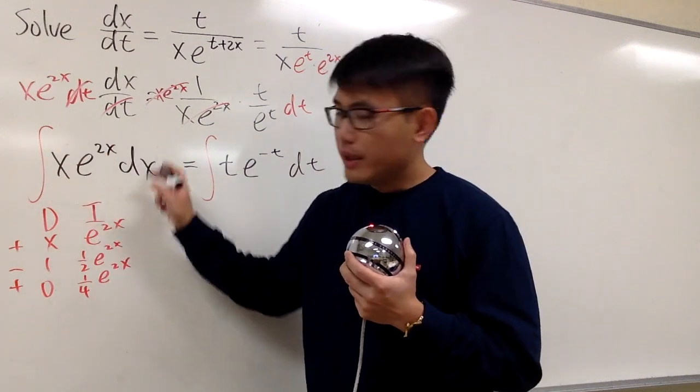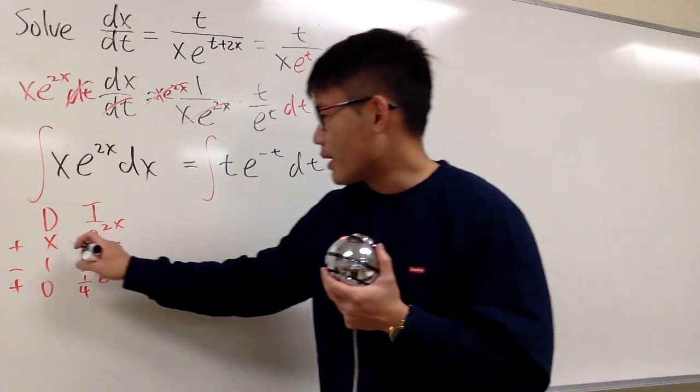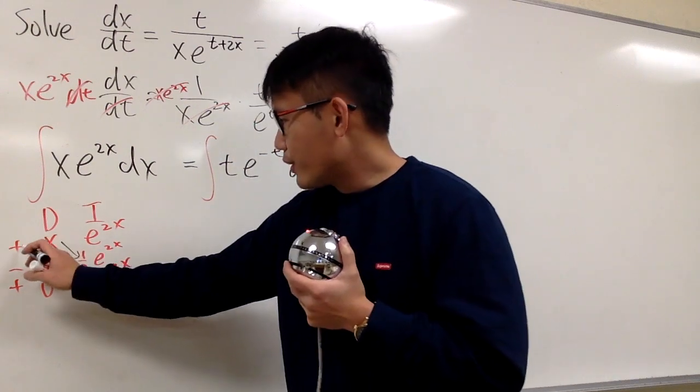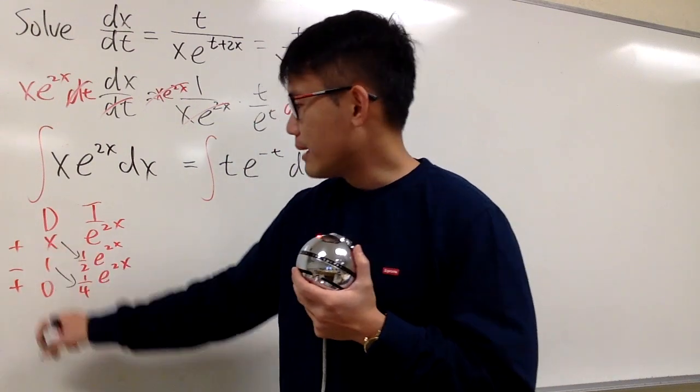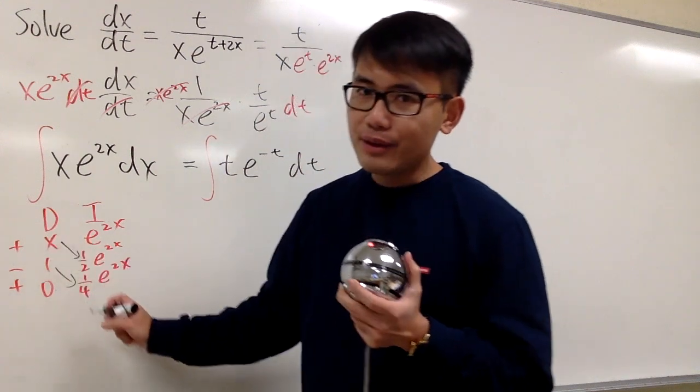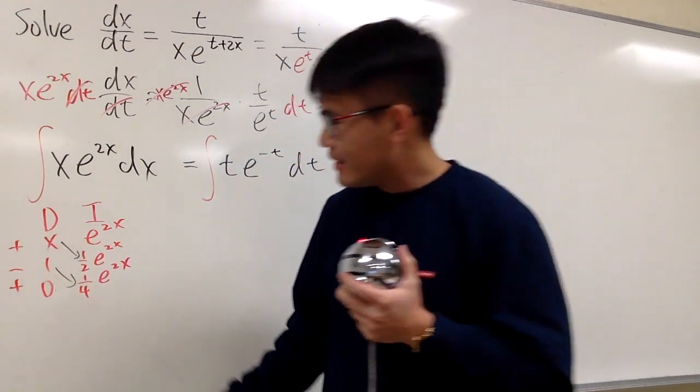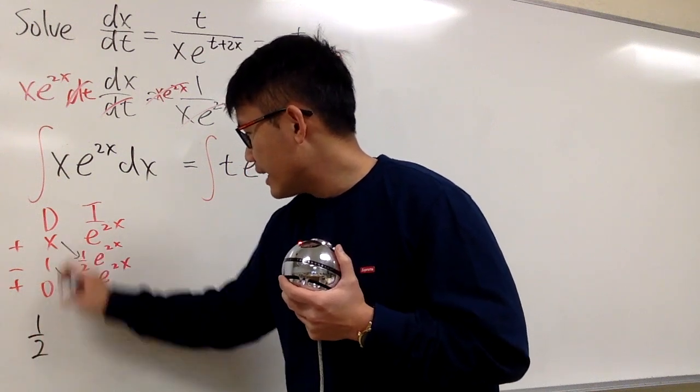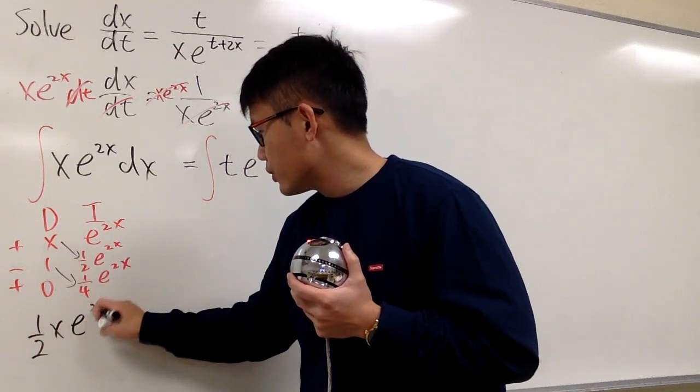So after we integrate this, running through the DI method with integration by parts, this is pretty much the answer. Don't forget the sign on the side, plus minus. And when you do the diagonals, there are the answers already. So we will have x times this, which is 1 half x, and then e to the 2x.